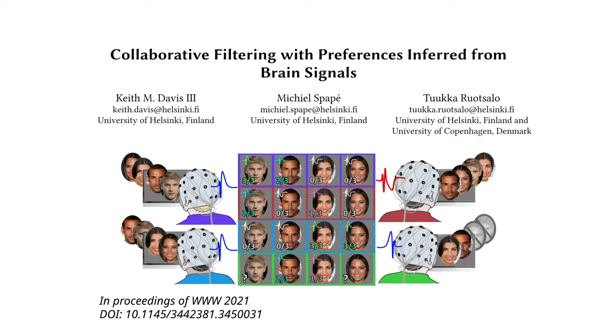In this work, we present collaborative filtering using preferences inferred from brain signals. Here we demonstrate, for the first time, the use of subjective preferences predicted from brain signals in a content recommendation system.